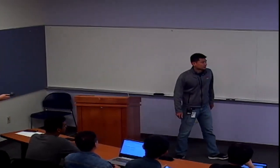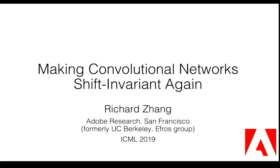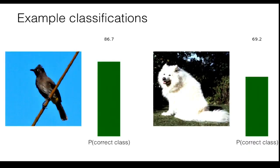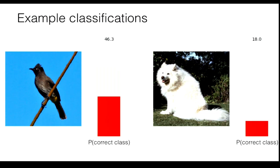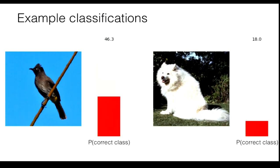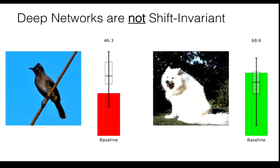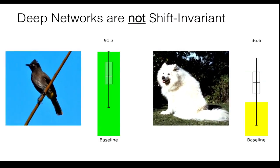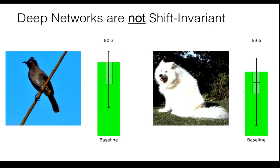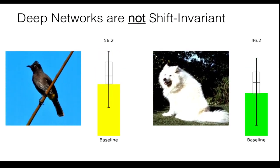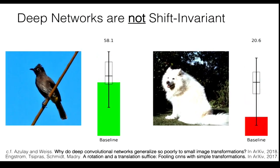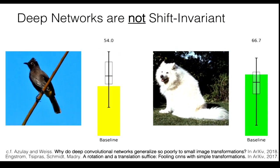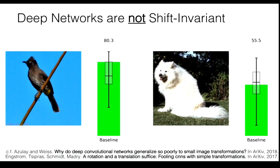Thanks very much for the introduction. I'm a research scientist at Adobe, and I just graduated from Efros' group. So these two images here are classified correctly, but these two are not. The only difference between them is a very seemingly innocuous shift operation. I can just play this animation and you see that the classifications are bouncing up and down as I'm simply sliding the image by one pixel at a time.